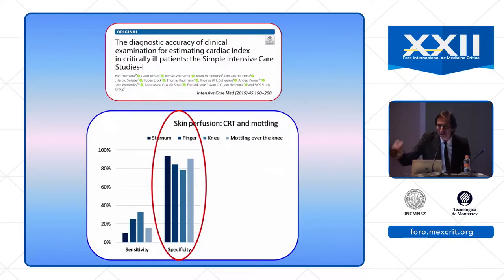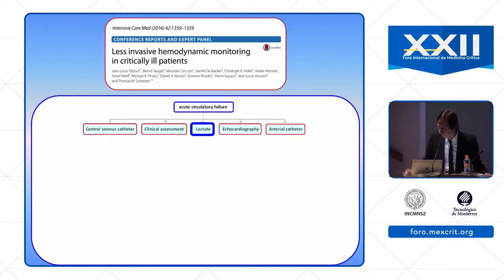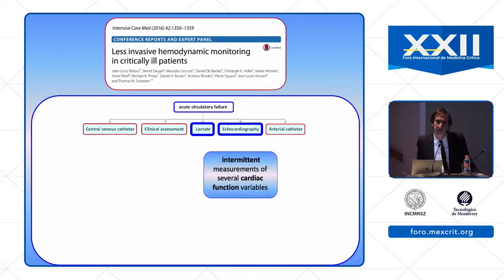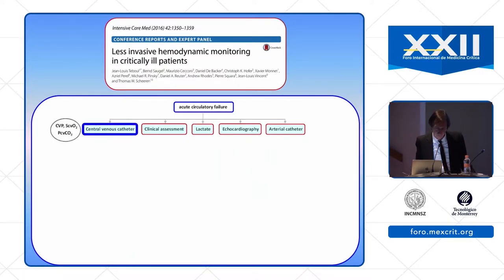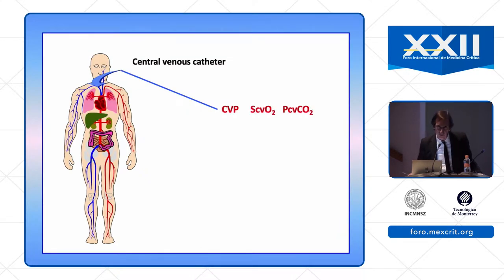If you have a prolonged CRT or the presence of mottling, this indicates that cardiac output is low — not sensitive but very specific. So you don't need to measure cardiac output if you have these signs at the bedside. Lactate is also important, not only for baseline value but for the change over time. Echocardiography is important as it can provide many variables to assess cardiac function — right as well as left ventricular function. Central venous catheter is also recommended.